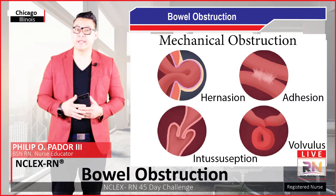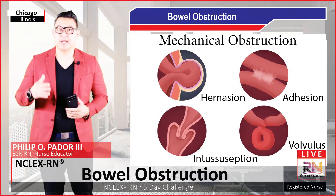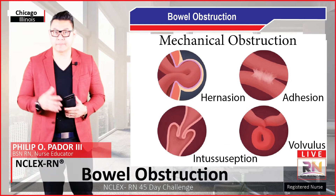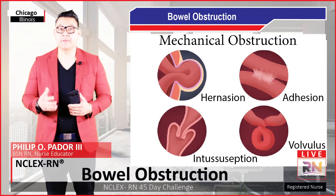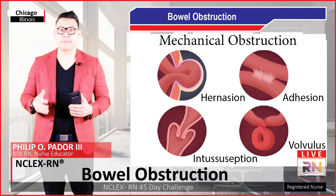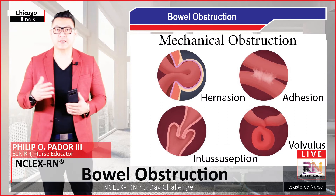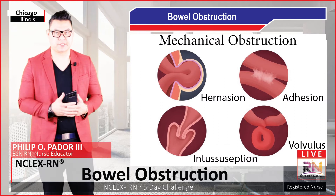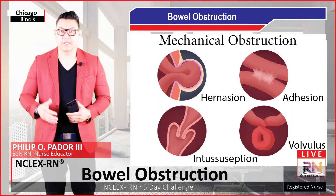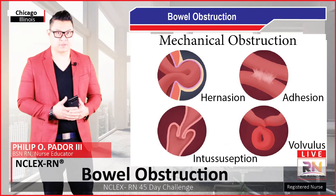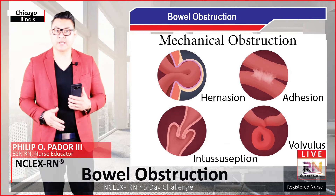Another cause of mechanical obstruction is hernia — essentially a protrusion of part of the intestines through the abdominal wall. Because the abdominal wall could be weak, this can strangulate the intestines causing obstruction. Finally, the last type of mechanical obstruction is referred to as volvulus, which is essentially where we get twisting of the bowels.